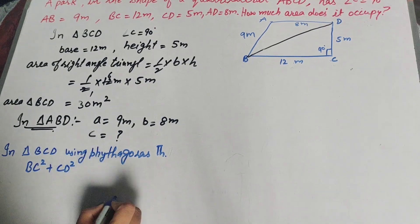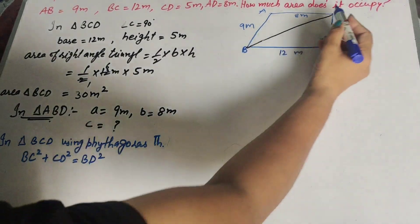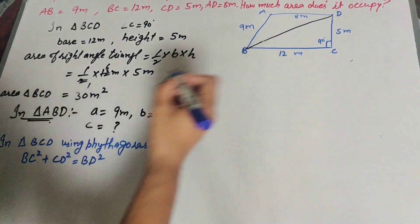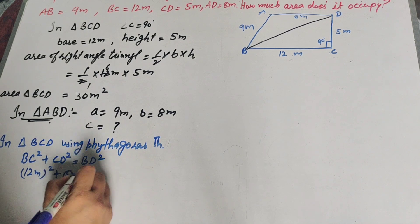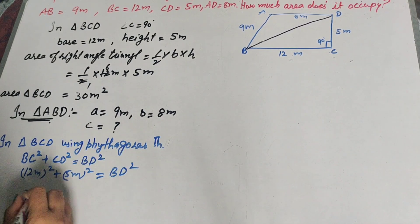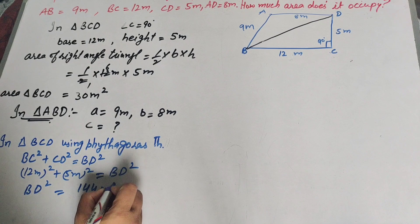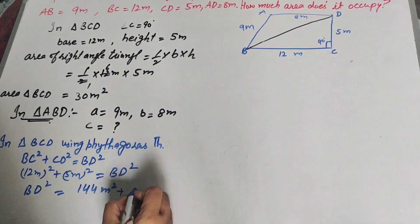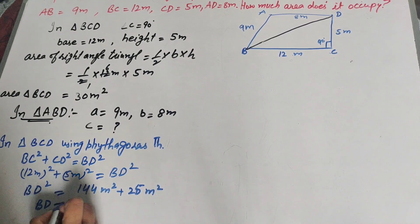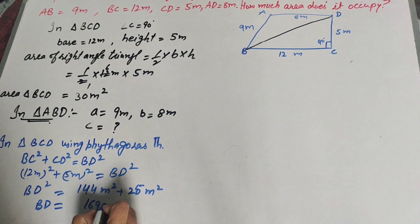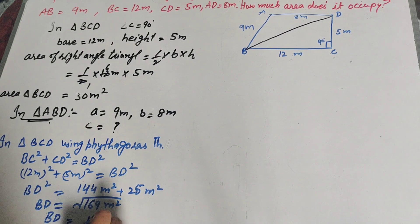So BC squared plus CD squared equals BD squared. BC equals 12 meters and CD equals 5 meters. BD squared equals 12 squared plus 5 squared, which equals 144 plus 25, giving BD squared equals 169. Taking the square root, BD equals 13 meters.